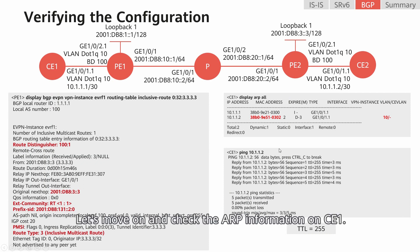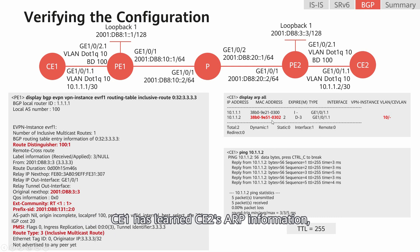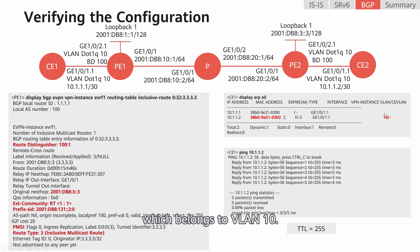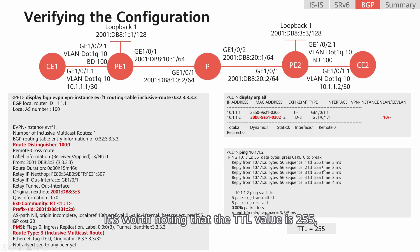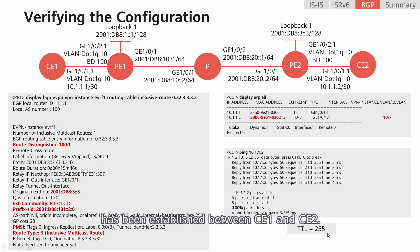Let's move on and check the ARP information on CE1. The command output shows that CE1 has learned CE2's ARP information, which belongs to VLAN10. When we run the ping command on CE1 to ping CE2, the ping is successful, indicating that the configuration has succeeded. It's worth noting that the TTL value is 255, indicating that a virtual direct connection has been established between CE1 and CE2.